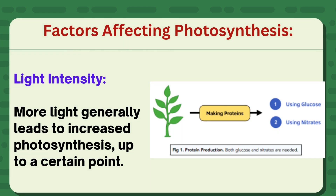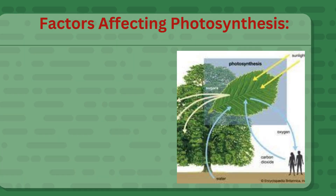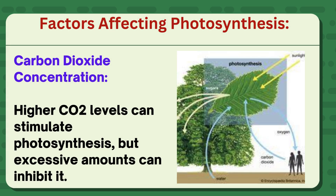Factors affecting photosynthesis. Light intensity: more light generally leads to increased photosynthesis, up to a certain point. Carbon dioxide concentration: higher CO2 levels can stimulate photosynthesis, but excessive amounts can inhibit it.